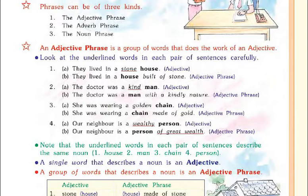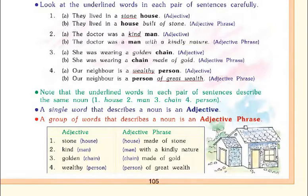Note that the underlined words in each pair of sentences describe the same noun. We have seen some nouns in the sentences — like house, man, chain, and person. A single word that describes a noun is an adjective, and a group of words that describes a noun is an adjective phrase.